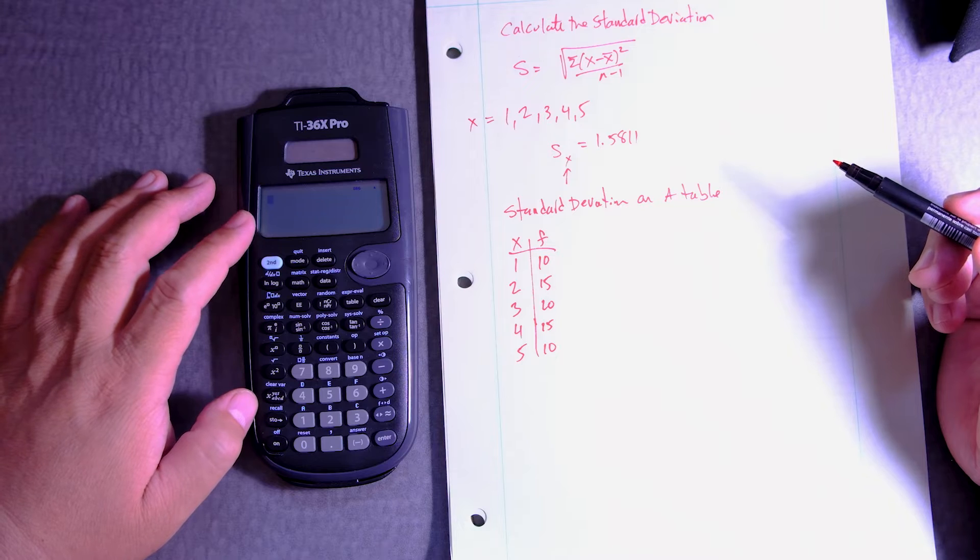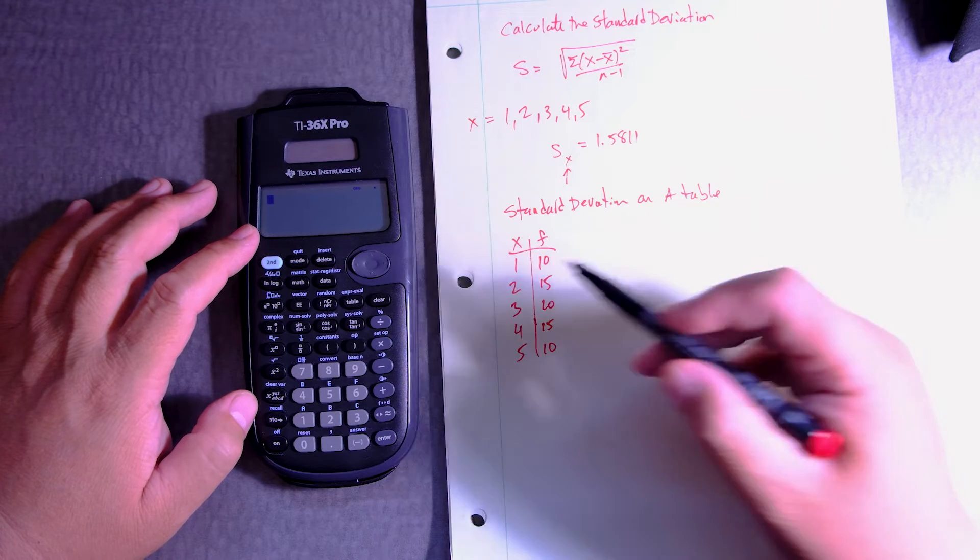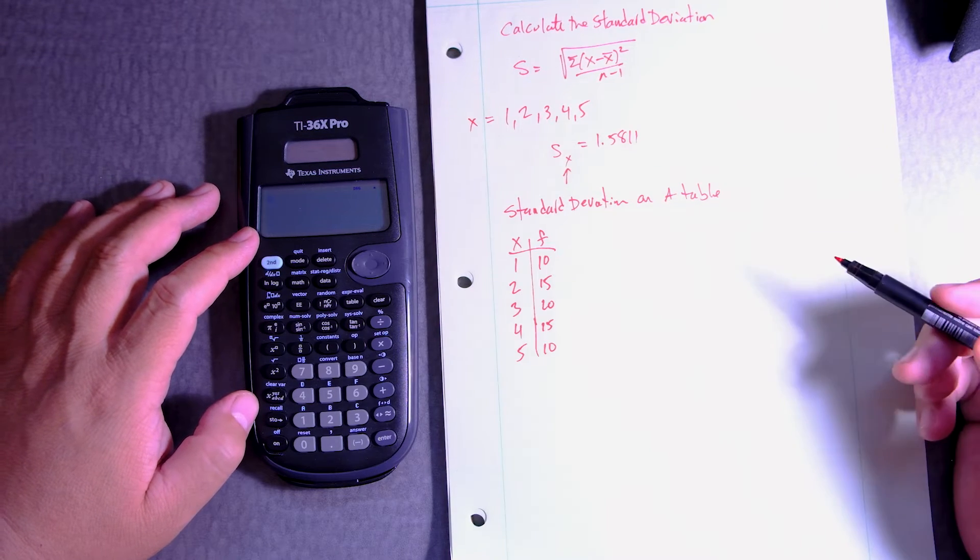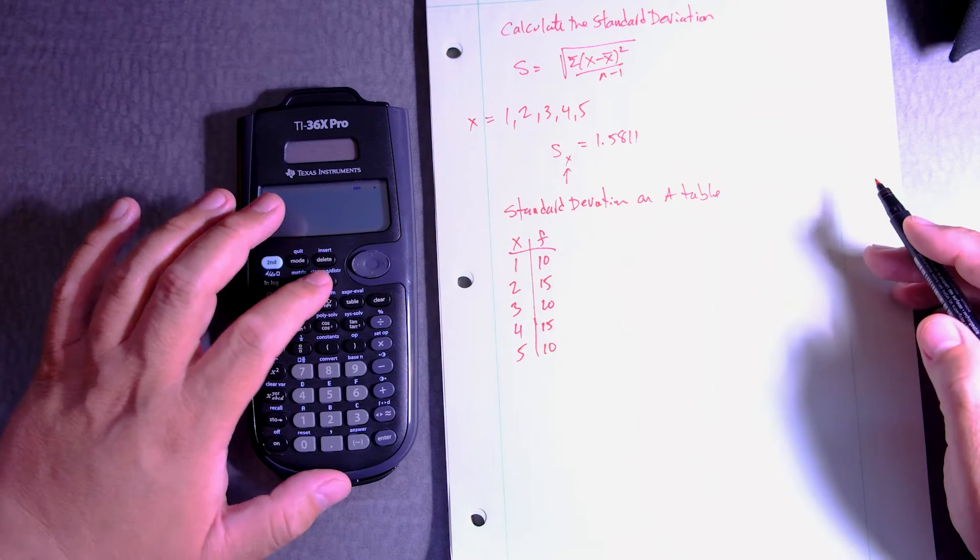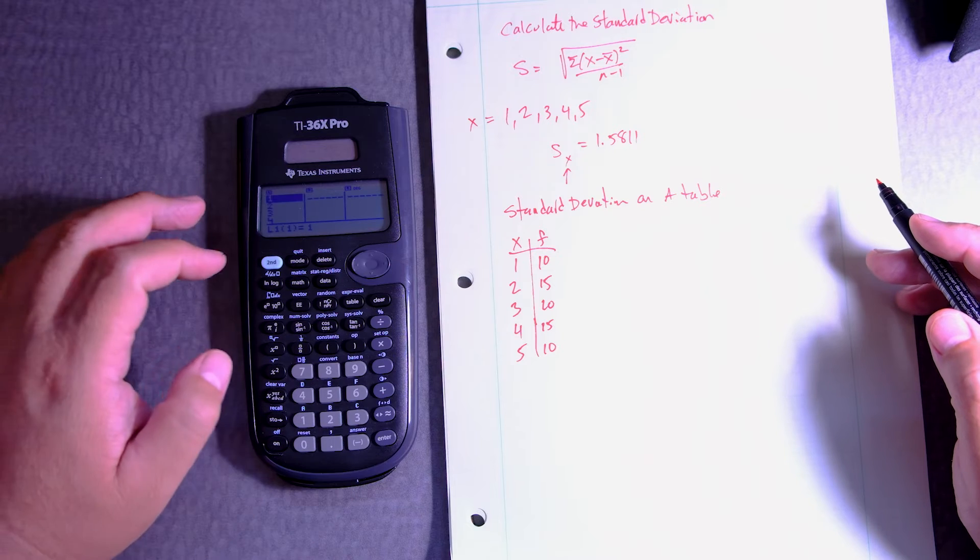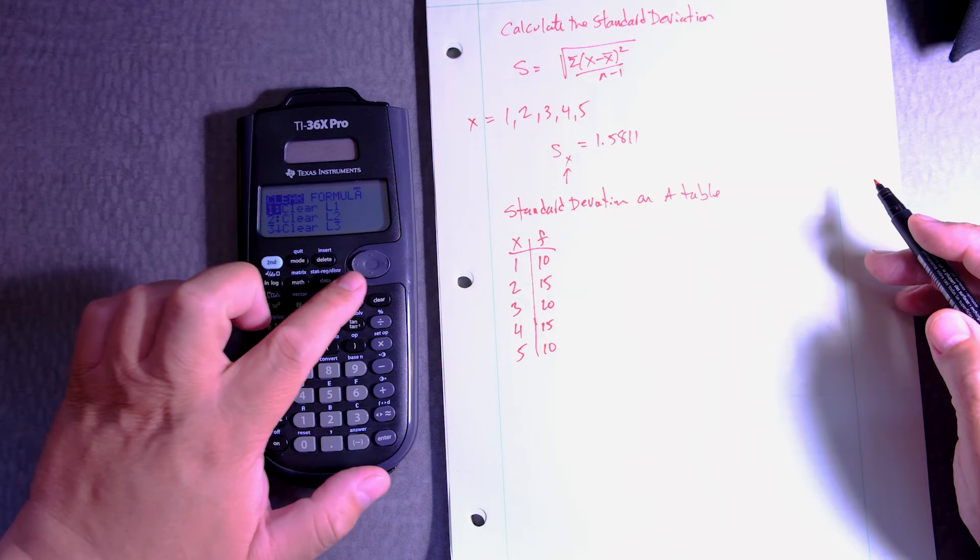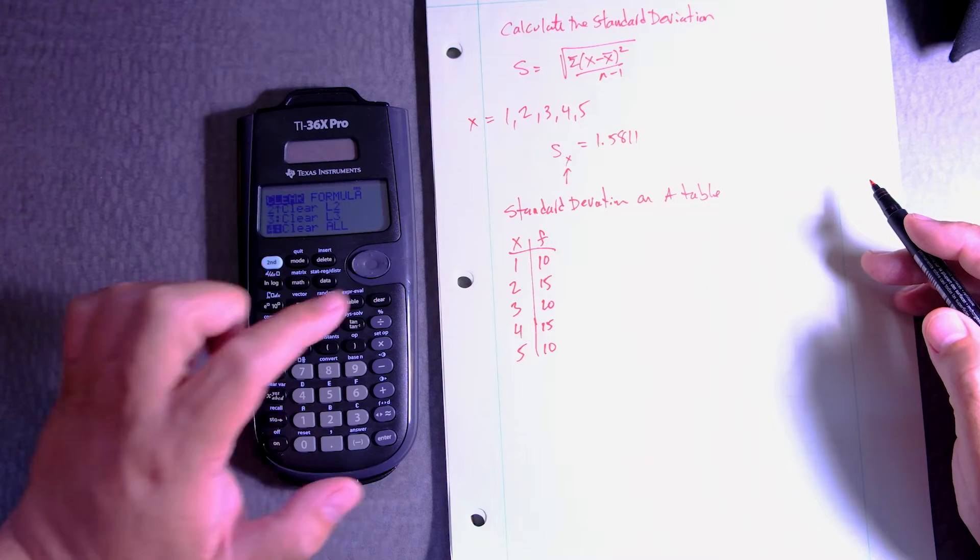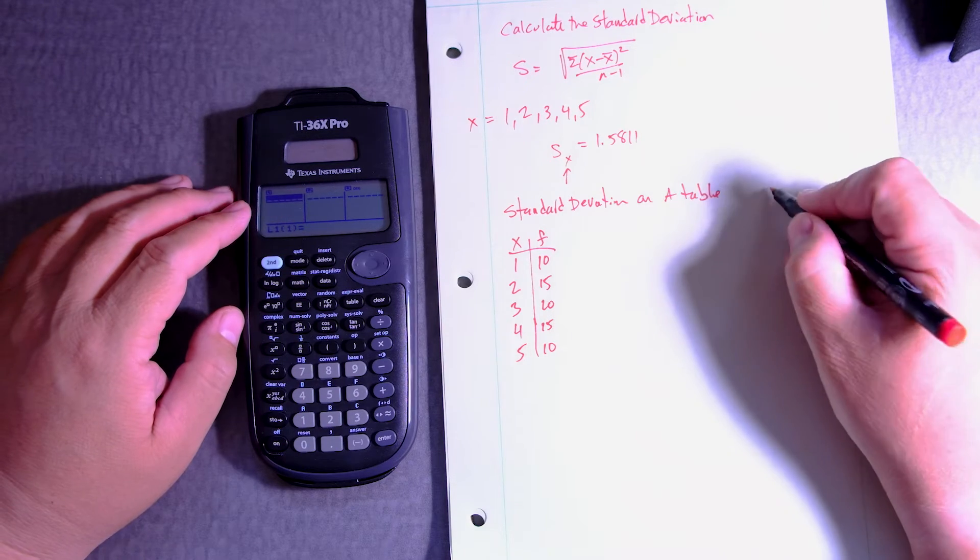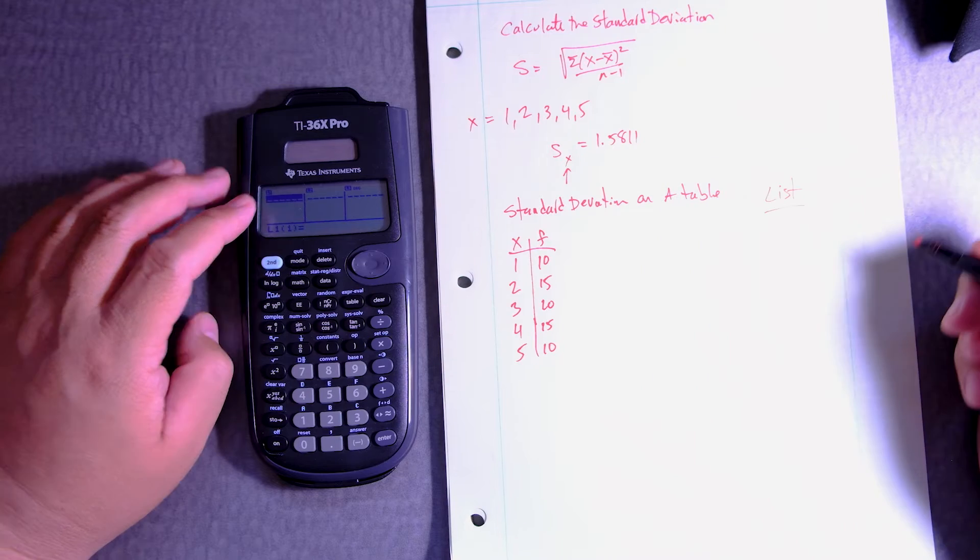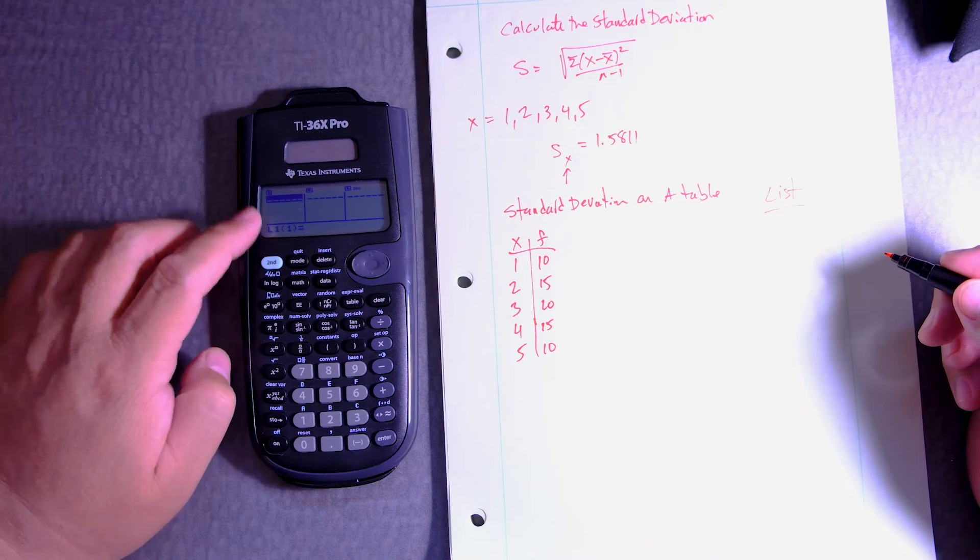This is the TI-36X Pro, and I want to find the standard deviation of this table. To do that, we've got to put these numbers in a list in the calculator. We press data, and I'm going to press data again to clear all the lists. It's a list, and we have three lists.